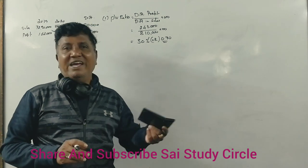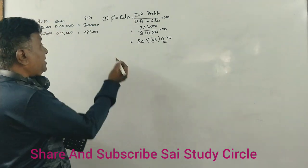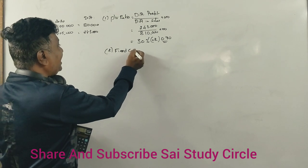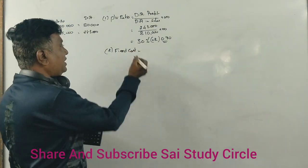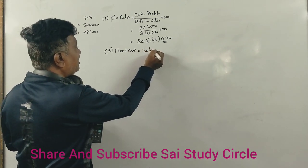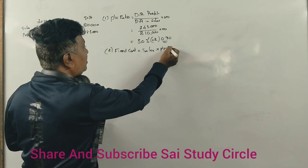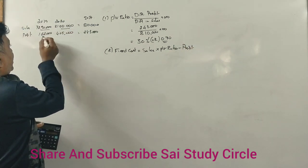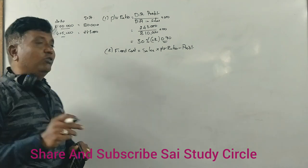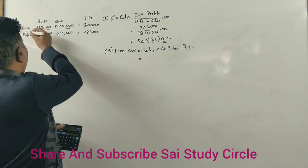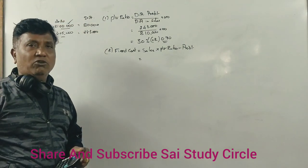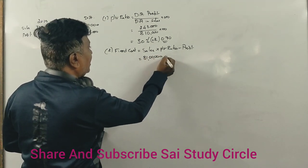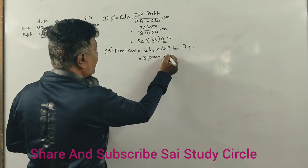Now the first question is answered: PV Ratio is 30%. Next, we calculate Fixed Cost. The formula for Fixed Cost is: Sales multiplied by PV Ratio, minus Profit.